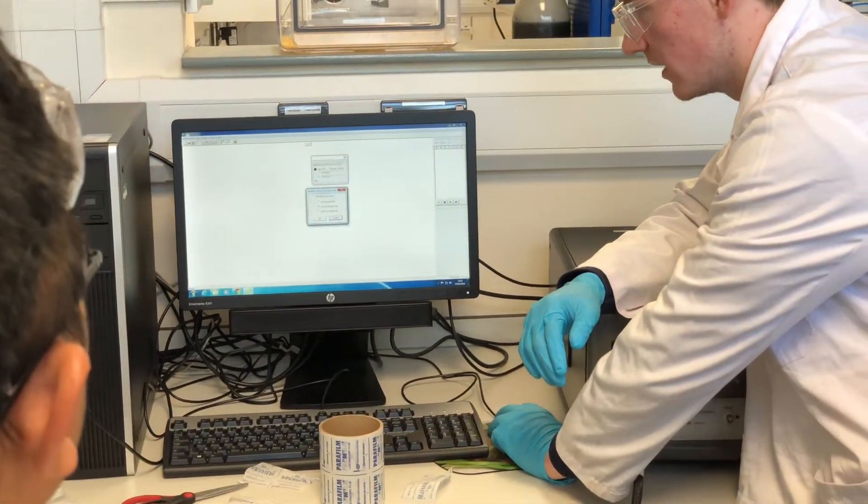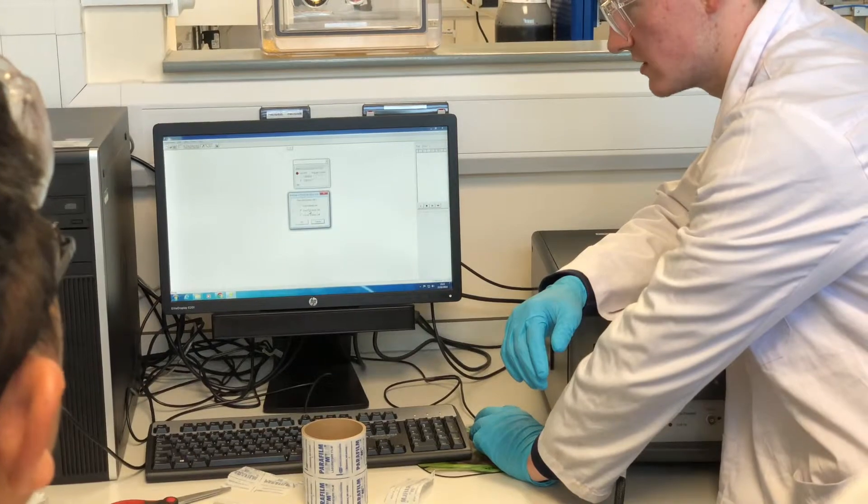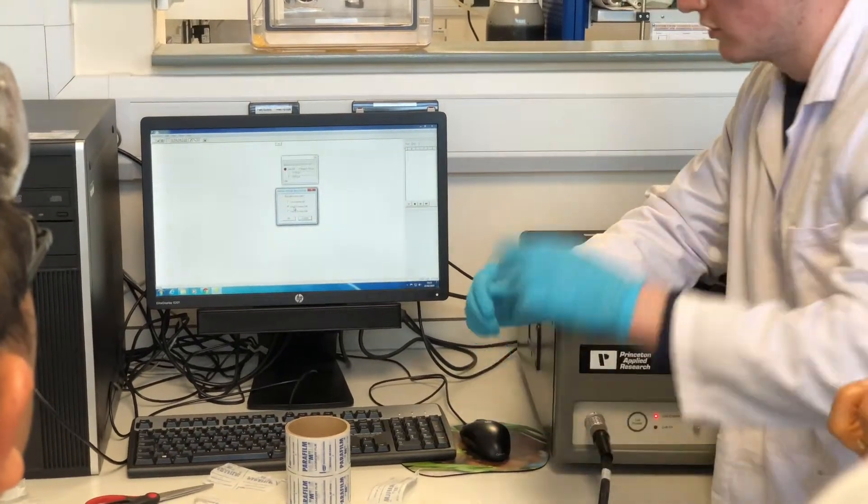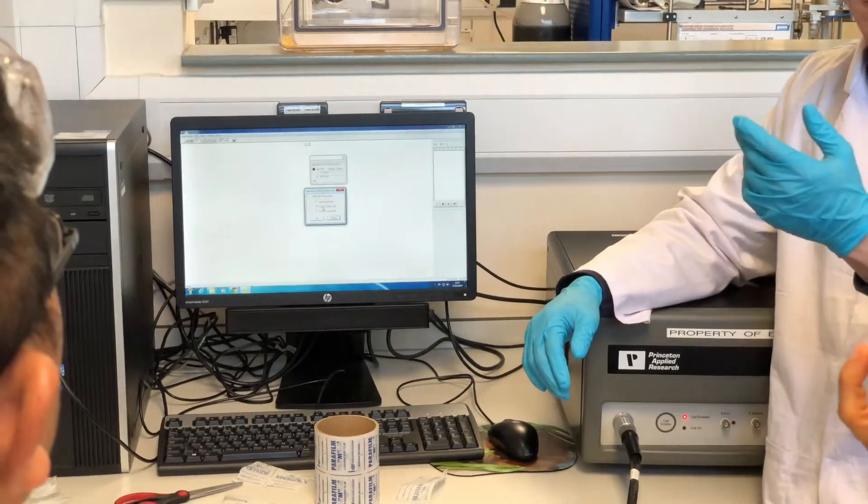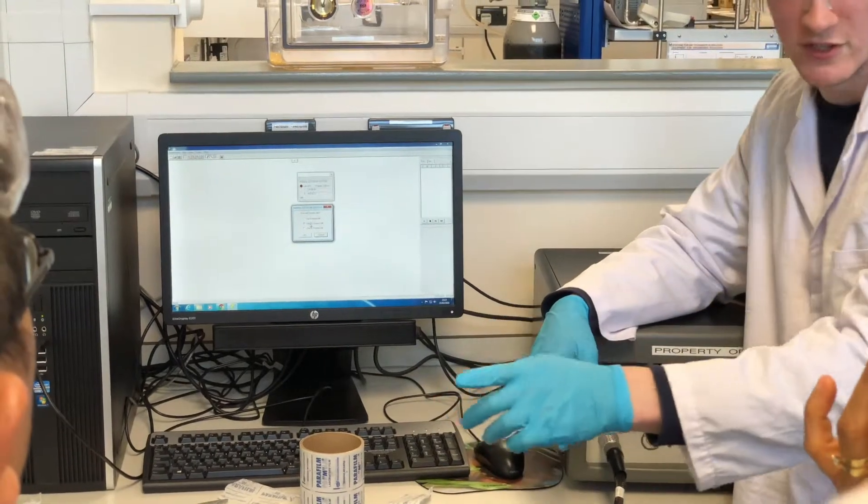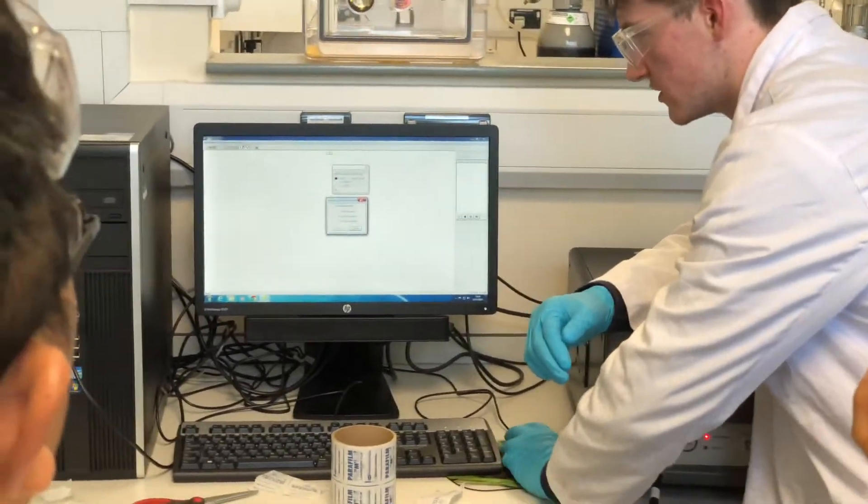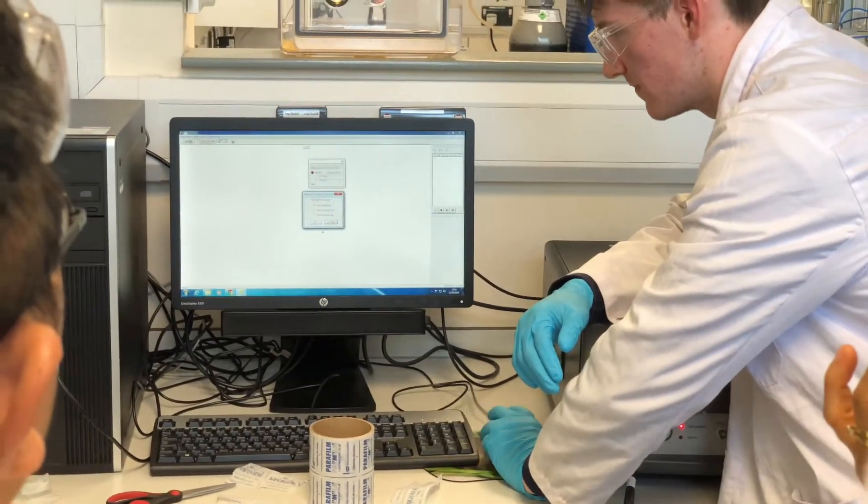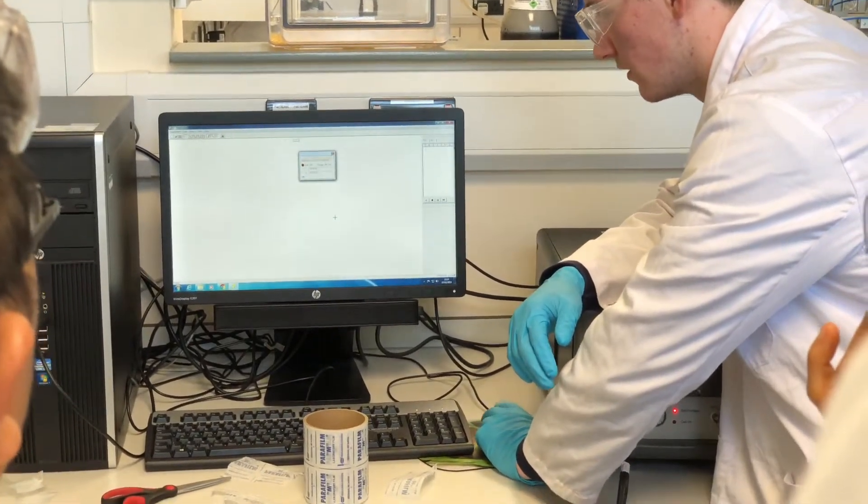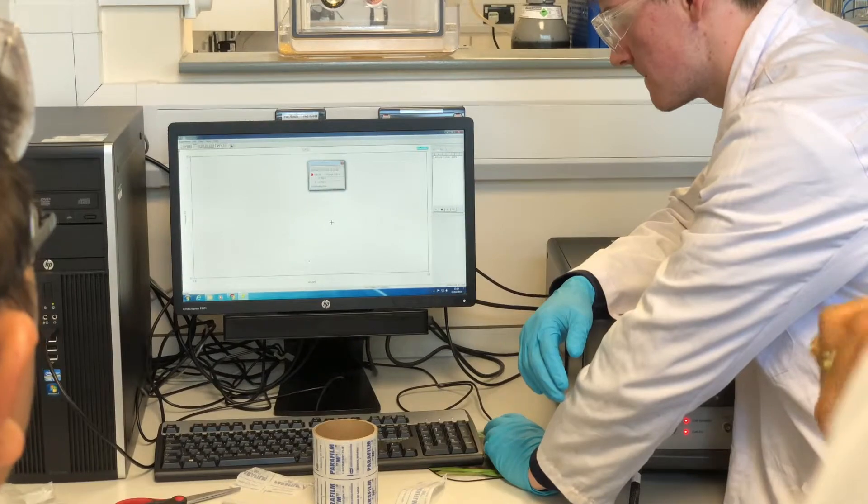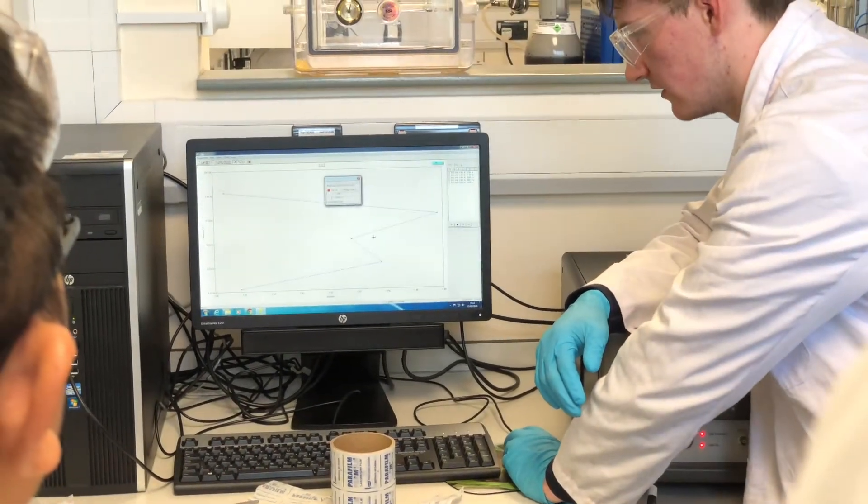And we can just hit run and it gives us an option of different cells. So the default option is using the DC dummy cell. We're wanting it to use the cell that we've got connected, so it's the external cell. So we just click use external cell. And then it starts collecting data.